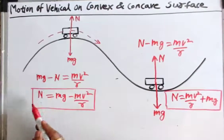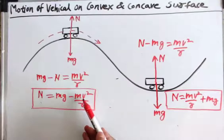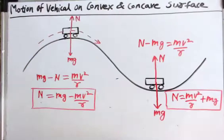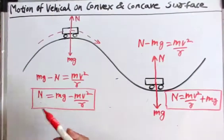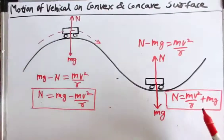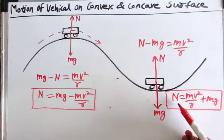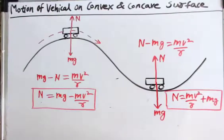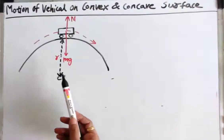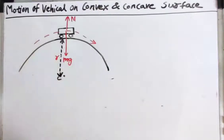From the equation of the convex surface, we can clearly see that as the speed of the vehicle increases, the normal reaction decreases. This shows that the vehicle may lose contact with the surface. Whereas in the case of the concave surface, as the speed of the vehicle increases, the normal reaction also increases. Now we will derive the equation for the maximum safe speed of a vehicle on a convex road surface, or on a convex overbridge.